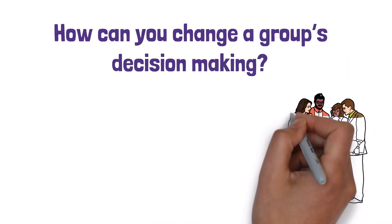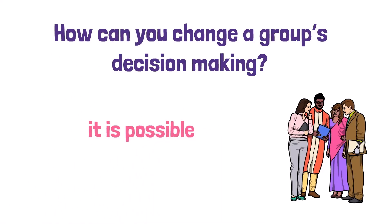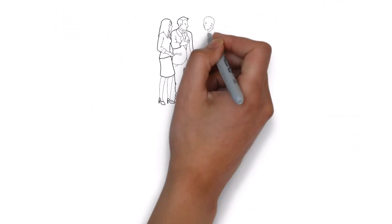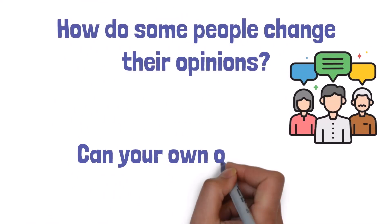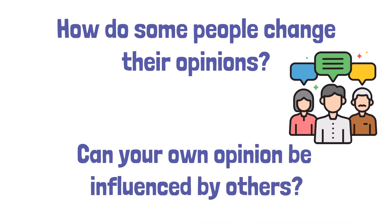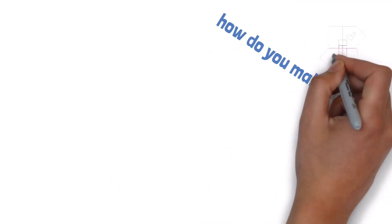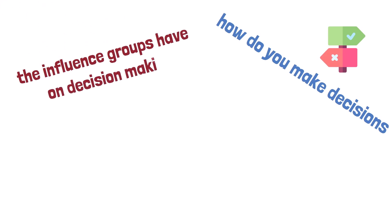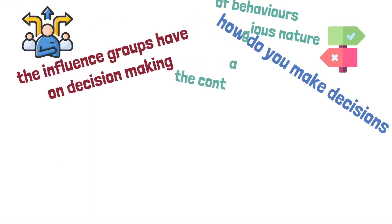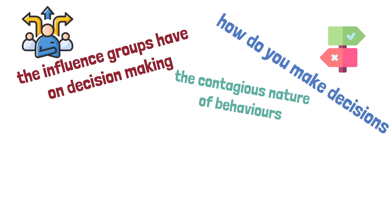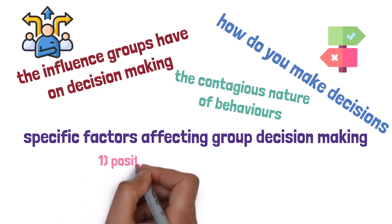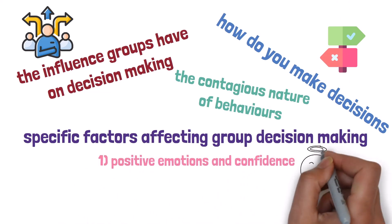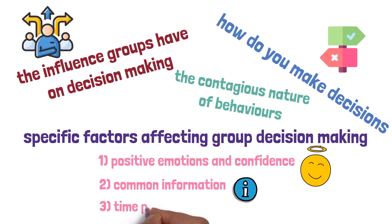How can you change a group's decision-making? It can be extremely frustrating to present facts to someone and have them completely disregard them in favor of pre-held beliefs. How do some people change their opinions, and can your own opinion be influenced by others? We start with exploring how you make decisions, before examining the influence groups have on decision-making, the contagious nature of behaviors, and lastly considering specific factors affecting group decision-making.